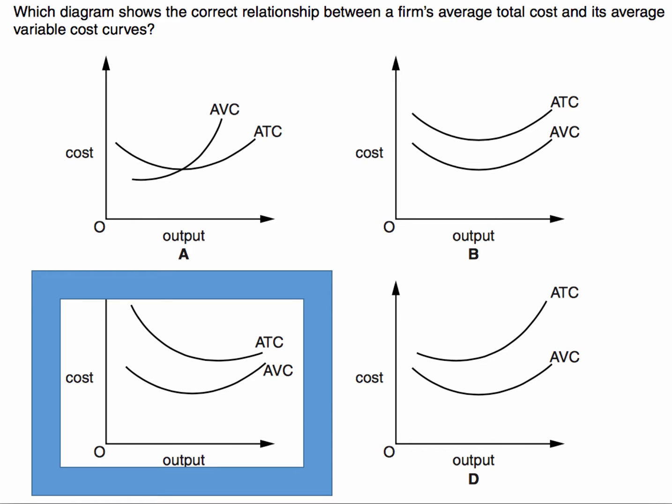A is wrong. A lot of people might have chosen A, but that wouldn't be AVC, it would be marginal cost. Marginal cost cuts average cost at the minimum point of